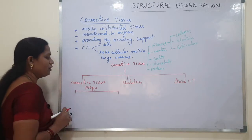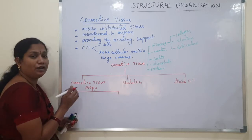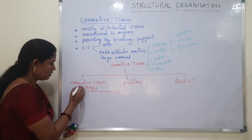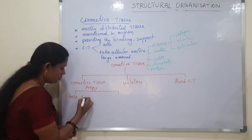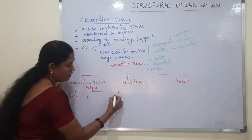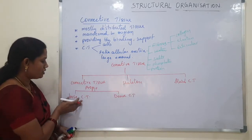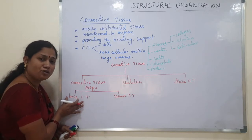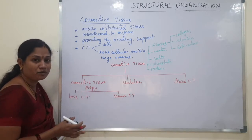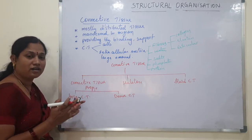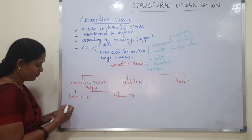Connective tissue proper is arranged in a loose manner and is divided into two types: loose connective tissue and dense connective tissue. In loose connective tissue, fibers are arranged loosely. In dense connective tissue, more fibers are present and they are attached to each other, forming compactness.